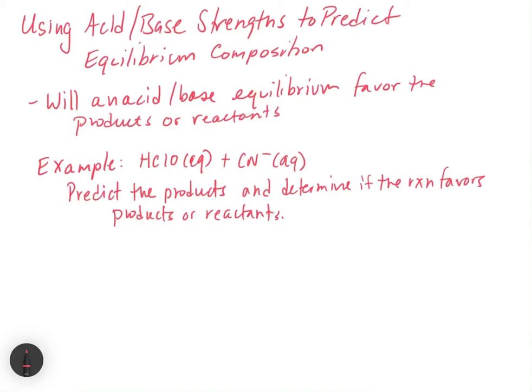In this video, we're going to use acid-base strengths to predict equilibrium composition. In the previous video, we looked at how we can use acid-base strengths relative to water to determine a variety of things, like whether an acid is a strong acid or a weak acid, whether something will be an acid or a base in water, and what defines a strong acid and a weak acid. In that last video, all of our comparisons were made with water as a reference point.